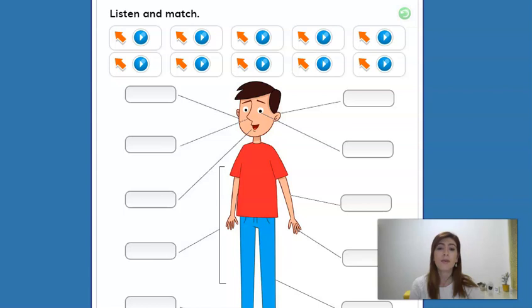Here we have the picture of the little boy and then we have some audios talking about each part. What you have to do is listen to the audio and then match to the correct part, the correct place where the part is. Now let's pause the video. It's time to do the activity by yourself and then I'll go back in a minute to help you out and correct it.